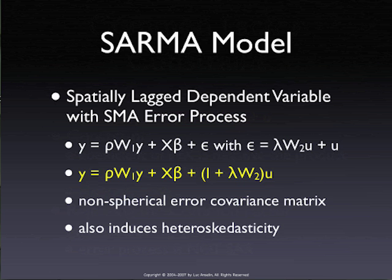The two higher order models: the first is called a SARMA model — spatial autoregressive then moving average for the errors. It's a combination of a model with a spatially lagged dependent variable WY and then a moving average for the error terms. To keep things general, we use two different weights matrices, though they don't have to be different — they could be the same. This is a model of a spatial lag with a non-spherical error covariance matrix, so it's more complex to estimate. But there's no identification problem in that it's very clear which is which — λ and ρ don't get mixed up together.